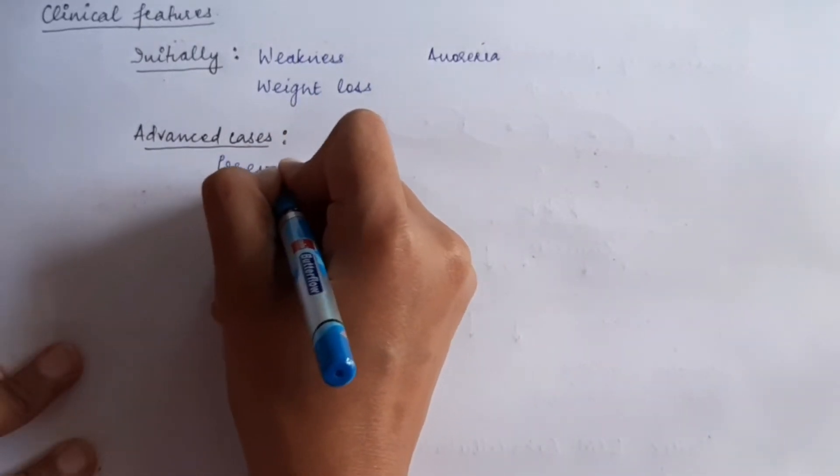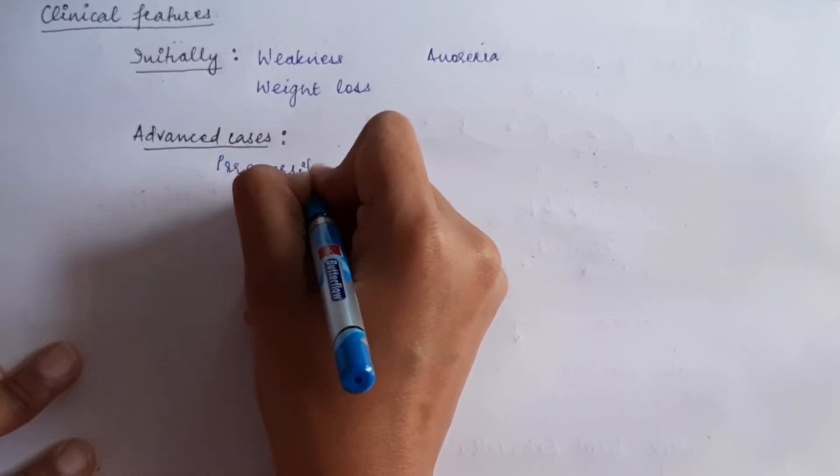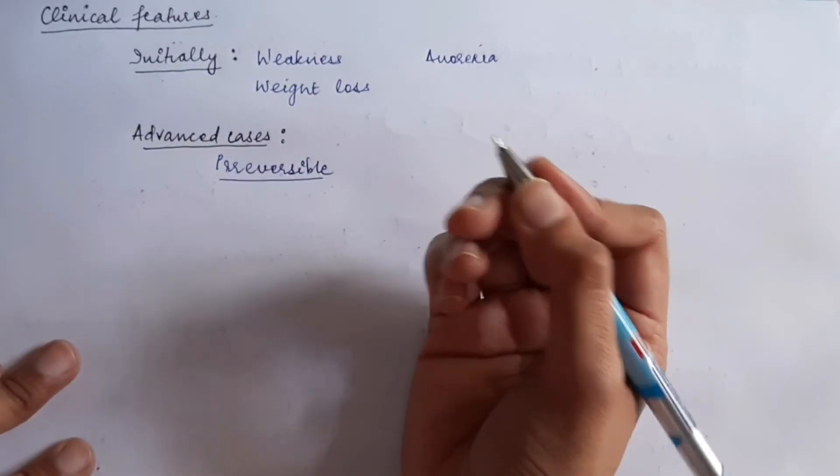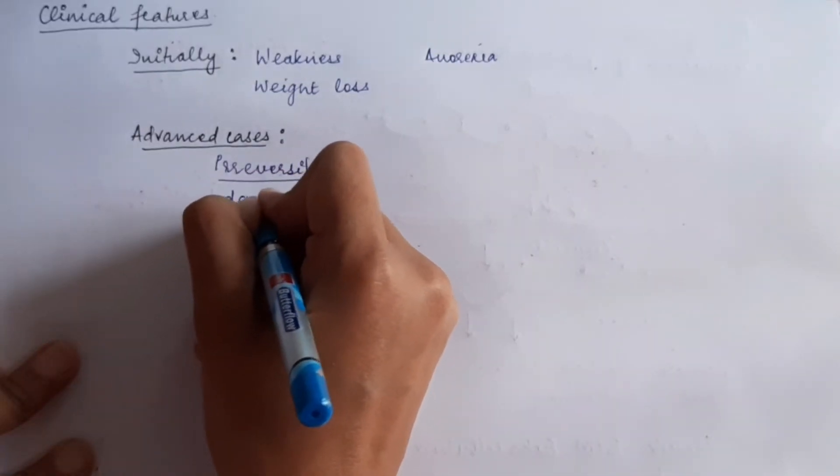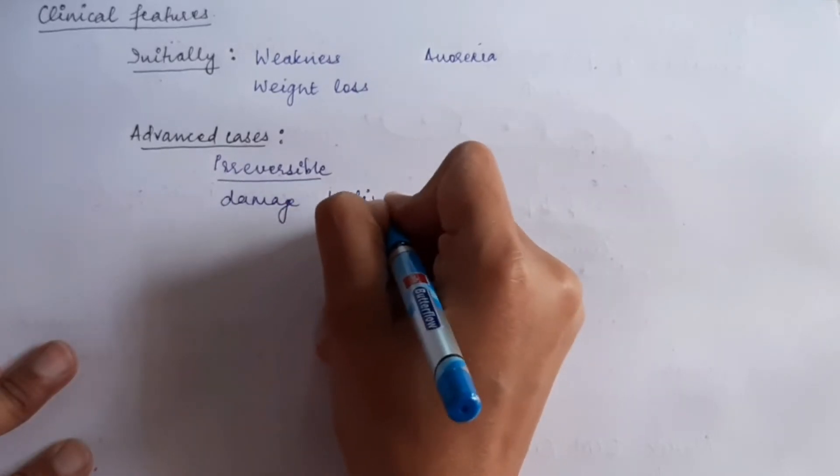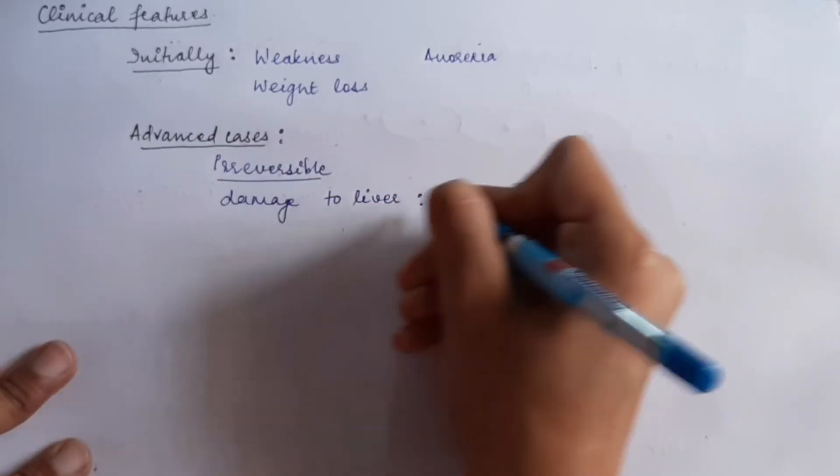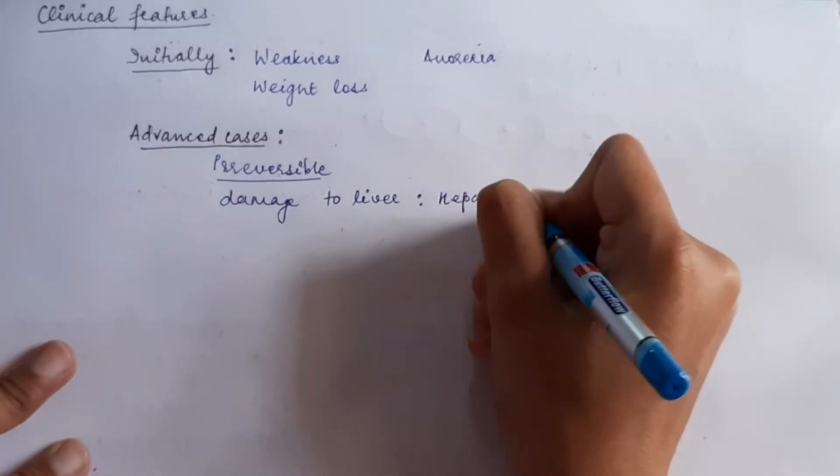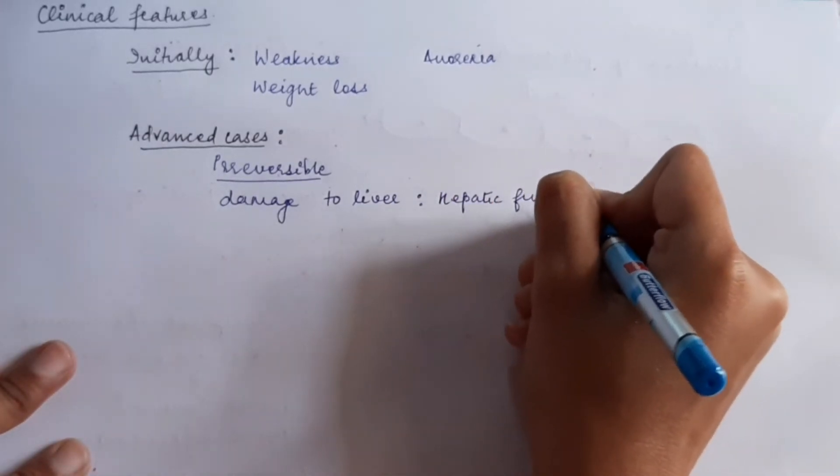as this is an irreversible process, the fibrosis taking place in the liver is irreversible. So, in advanced changes, we will see damage to the liver. The hepatic function will be disturbed.